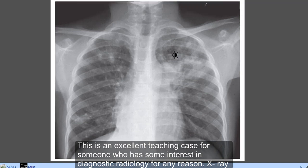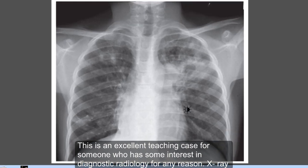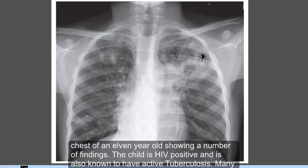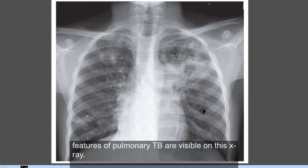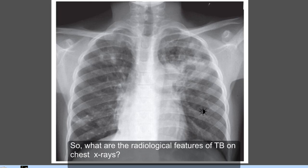This is an excellent teaching case for someone with interest in diagnostic radiology. This is a chest X-ray of an 11-year-old who is HIV positive and is also known to have active tuberculosis. Many features of pulmonary tuberculosis are visible on this X-ray.